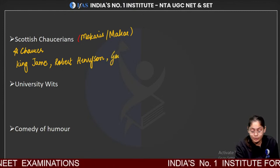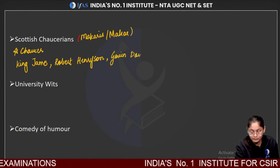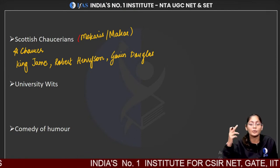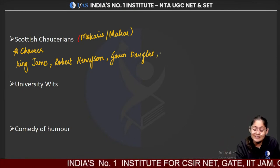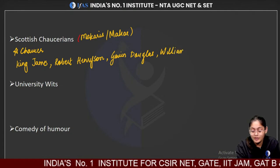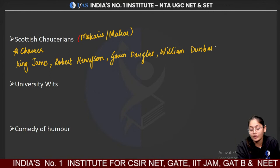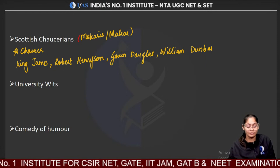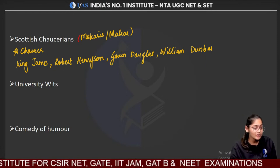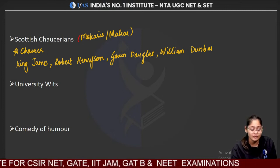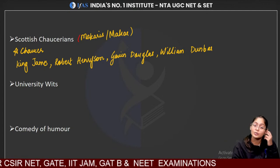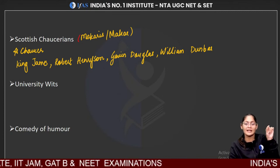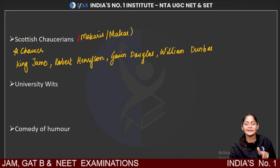Other important Scottish Chaucerians include Gavin Douglas and William Dunbar. All four of these people are really important when we talk about Scottish Chaucerians. Key points to remember: King James wrote King's Quair, and Robert Henryson continued Geoffrey Chaucer's Troilus and Criseyde. Mark these points in your notes.